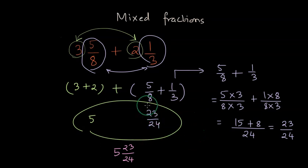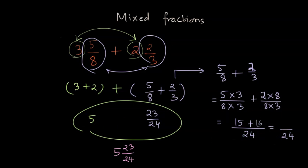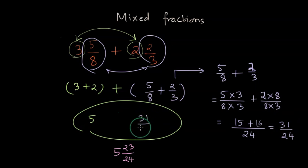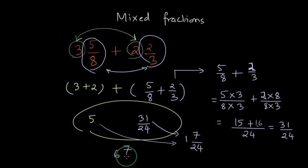There could have been a case where this fraction would have been greater than one. For example, if in the numerator of the second mixed fraction we had 2 instead, the operation would have changed. We would have had 15 plus 16 in the numerator, giving us 31. So the result would have been 5 wholes and 31/24. We can write 31/24 as 1 whole and 7/24, so adding 5 plus 1 whole gives us 6 wholes and 7/24.